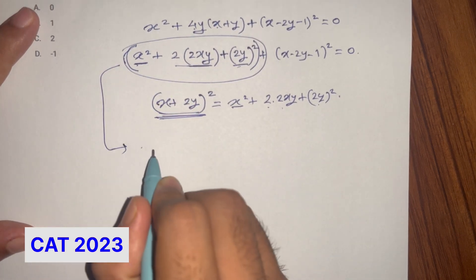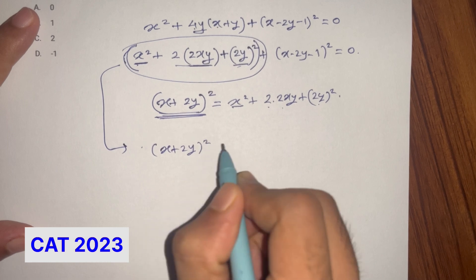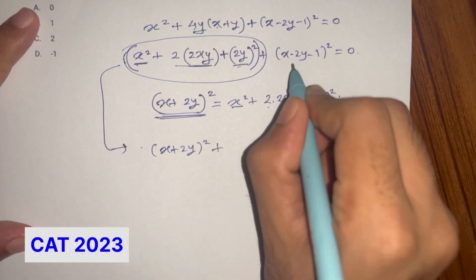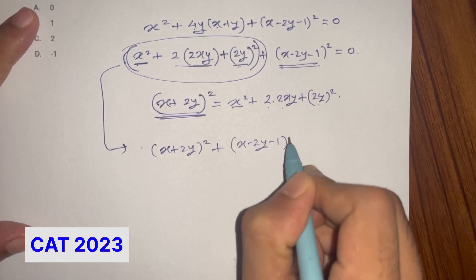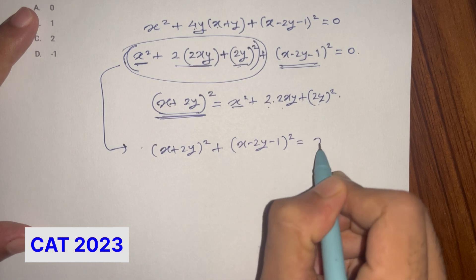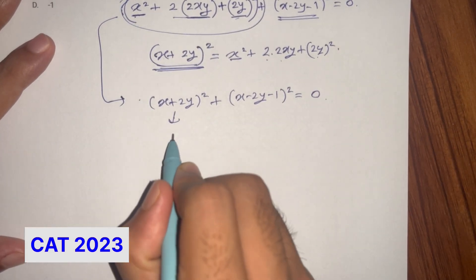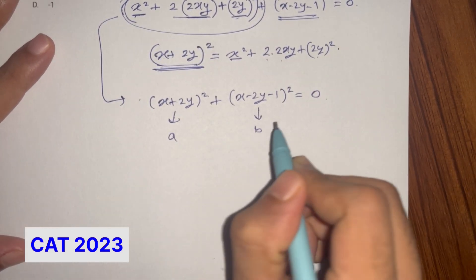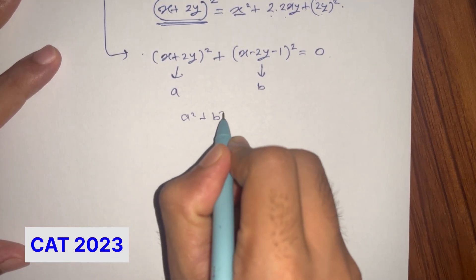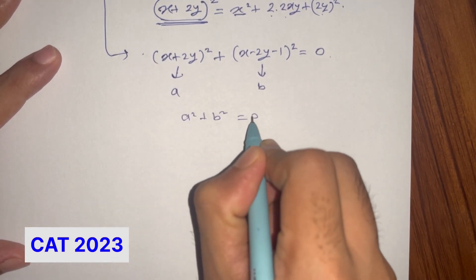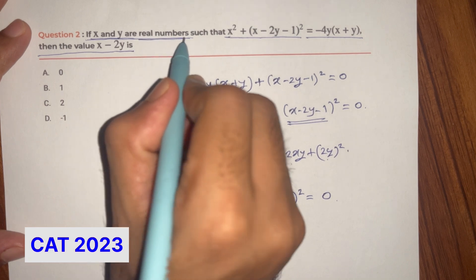So I will write this equation: (x plus 2y) the whole square plus (x minus 2y minus 1) the whole square is equal to 0. Now, I will call this A and that B. So we have A squared plus B squared is equal to 0, where x and y are real numbers.